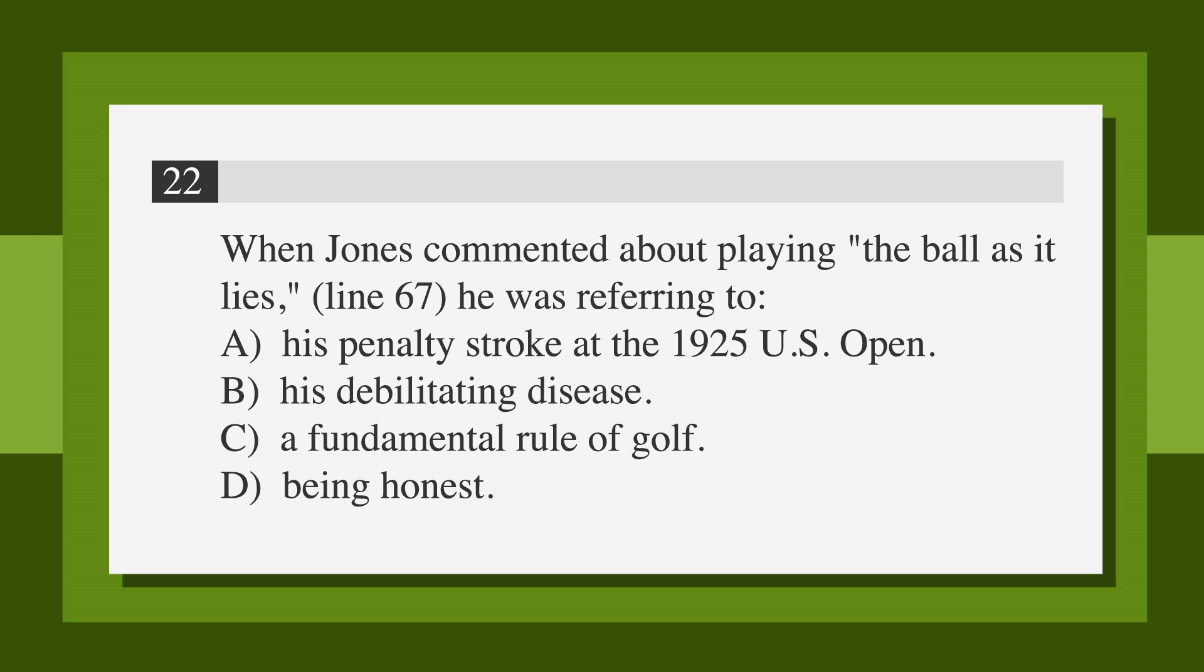Let's take a look at a practice problem. Remember, you're looking for an answer choice that you can support with evidence from the passage. So go find the evidence. This question comes from a passage about golfer Bobby Jones. When Jones commented about playing the ball as it lies, line 67, he was referring to A, his penalty stroke at the 1925 US Open, B, his debilitating disease, C, a fundamental rule of golf, or D, being honest.